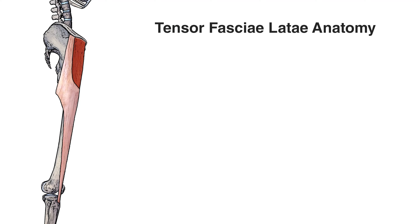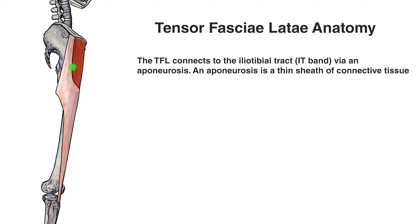Next we can see the TFL and the IT band from a lateral view. You can see here how the IT band serves as an attachment point for the TFL. The TFL is this reddish colour because it is a muscle, and its fibres are connecting into the IT band here. The IT band is not a muscle — it's a fibrous sheet of connective tissue — and the TFL's connection to the IT band allows it to connect all the way down past the knee.